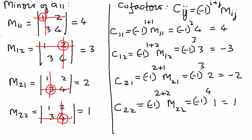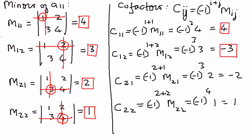We found all the values. The minors are: M11 is 4, M12 is 3, M21 is 2, and M22 is 1. The cofactors are: C11 is 4, C12 is negative 3, C21 is negative 2, and C22 is positive 1. We will use these minors and cofactors to find the determinants of a 2×2 and a 3×3 matrix in my next presentation.